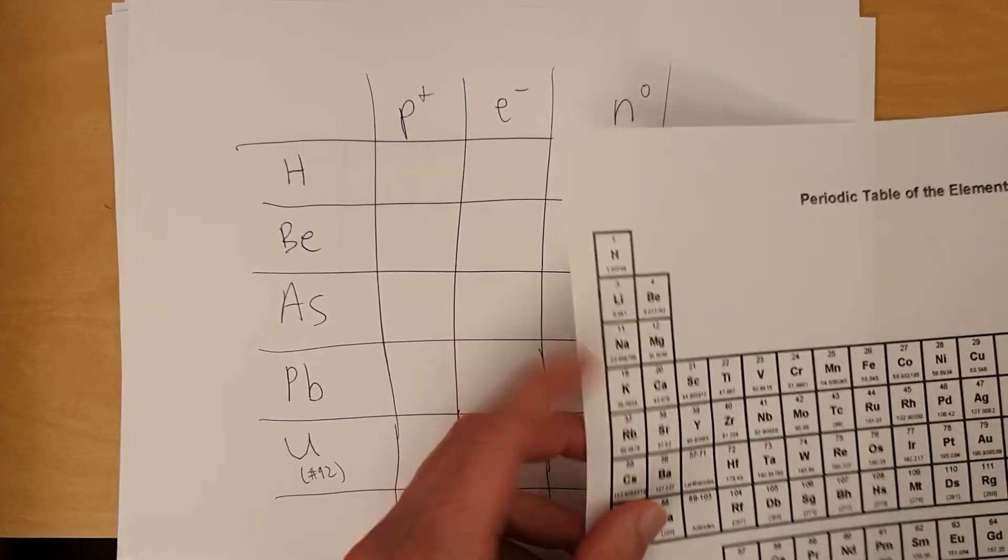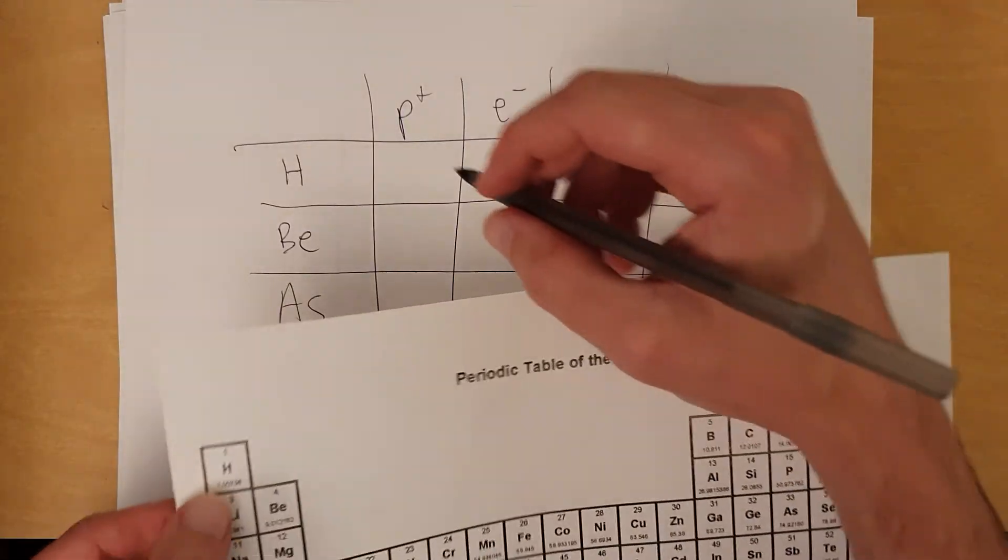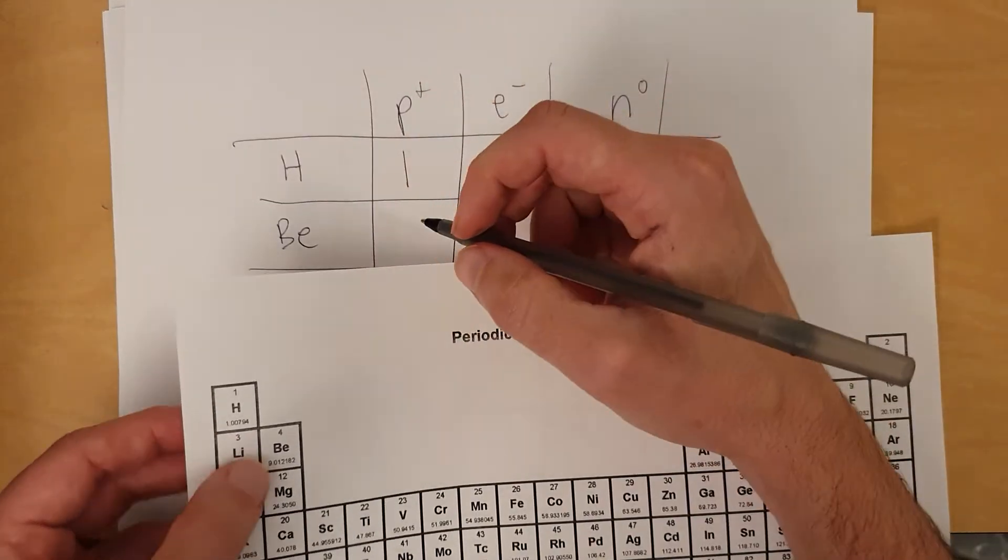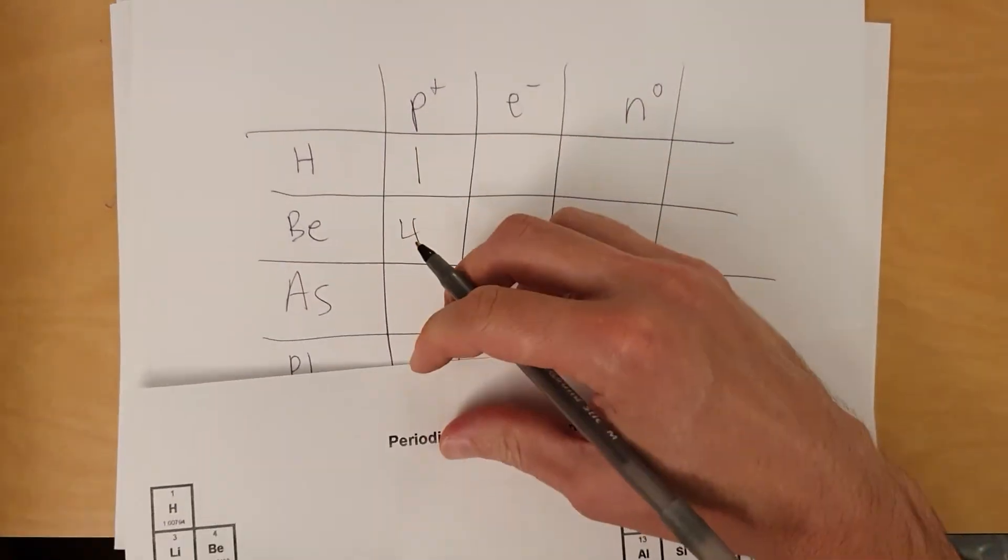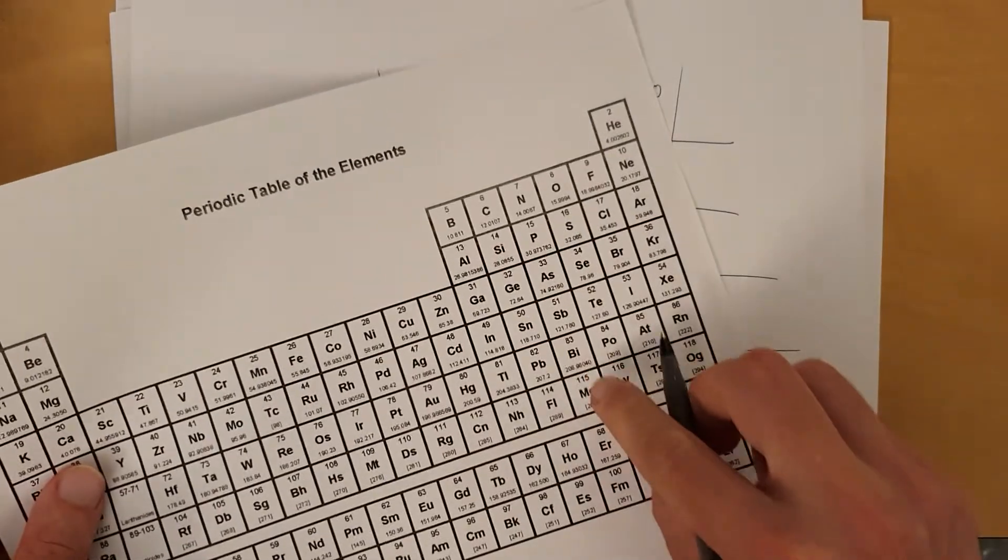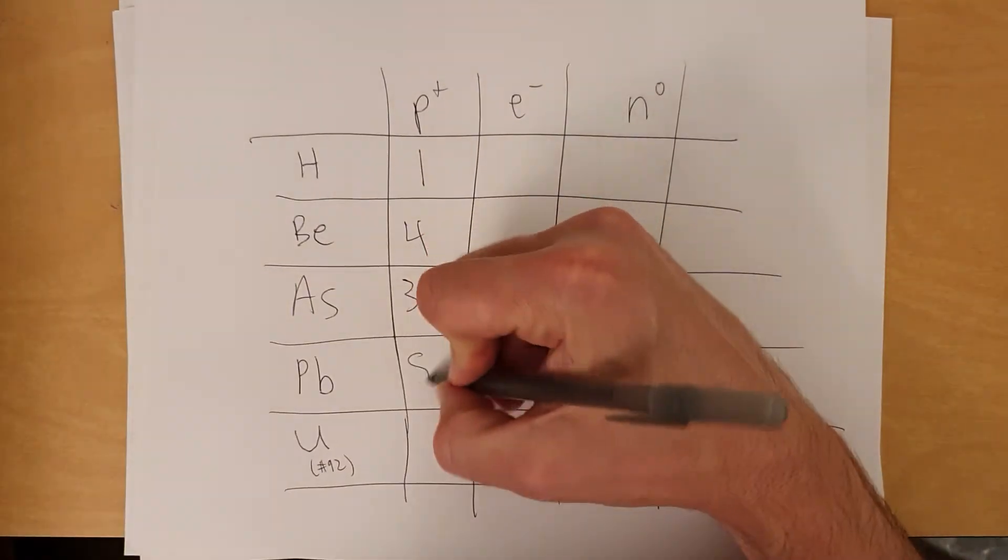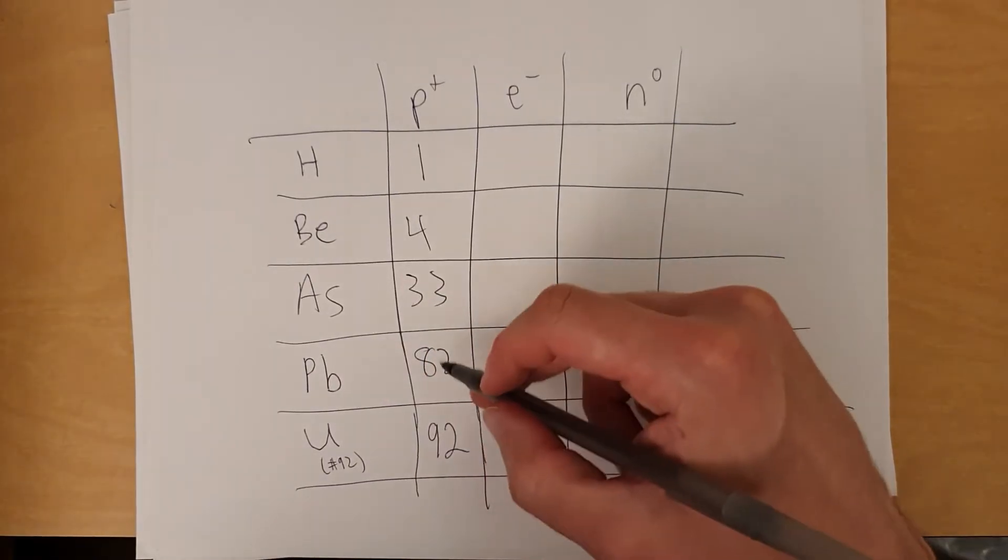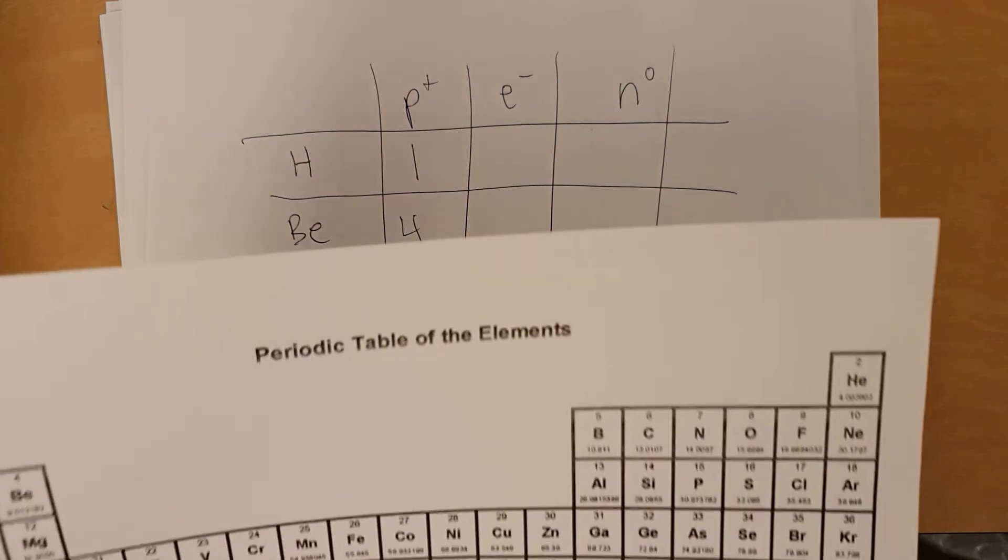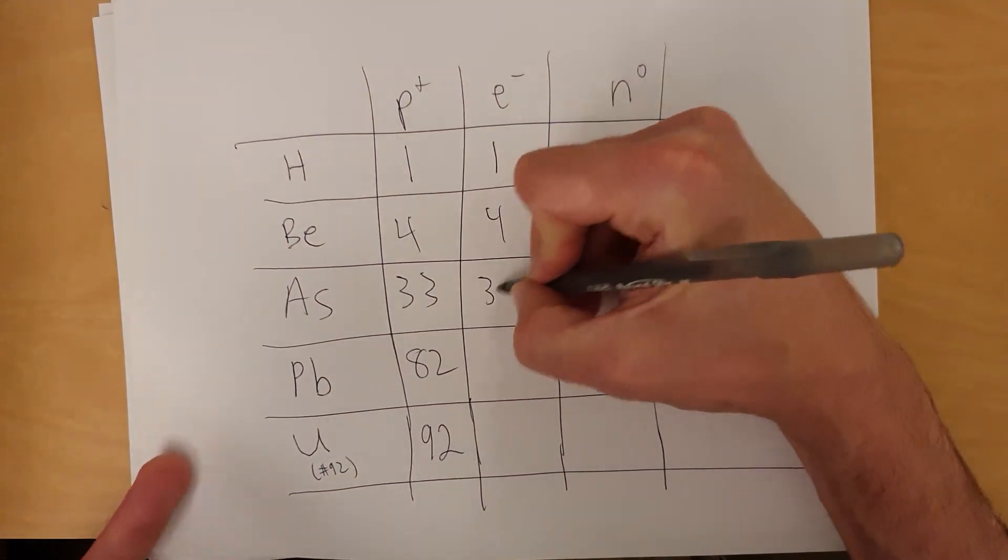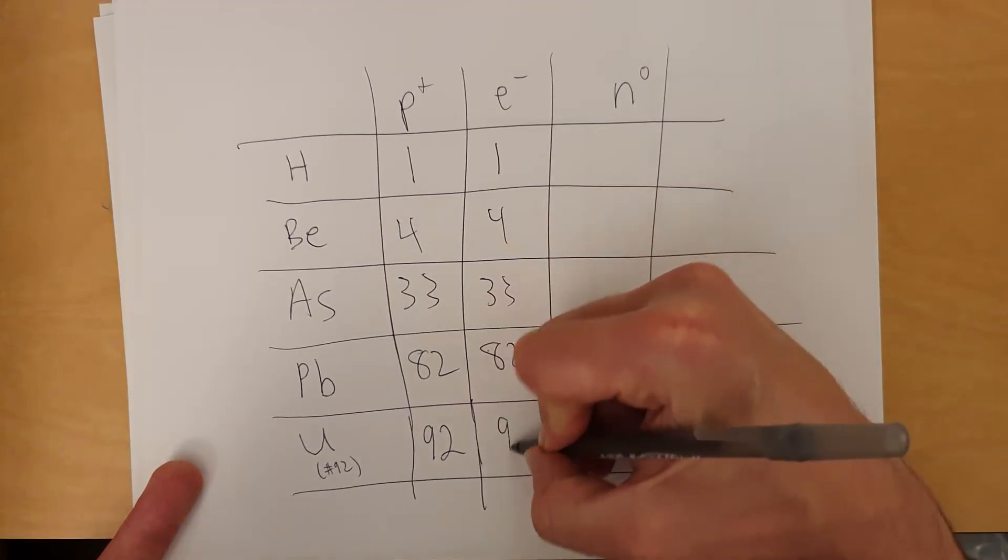Alright. So let's begin with the number of protons for each. Hydrogen, element number one, one proton. Beryllium is element number four, four protons. Arsenic is number 33. Lead is number 82. And uranium's element number 92. Therefore it has 92 protons, 82 protons for this one, 33 protons for that one, etc. Remember, we assume the number of electrons is the same: one, four, 33, 82, 92.